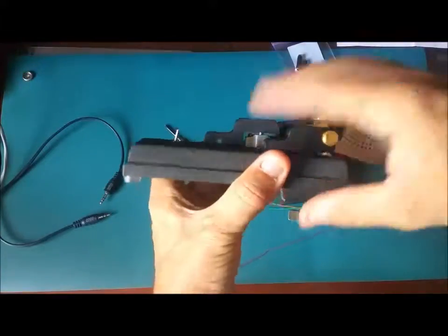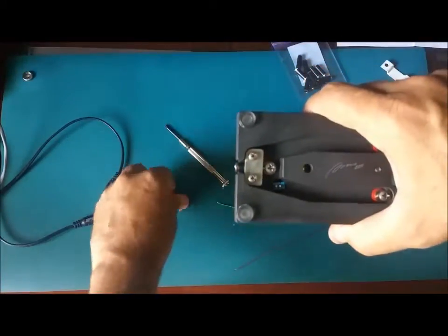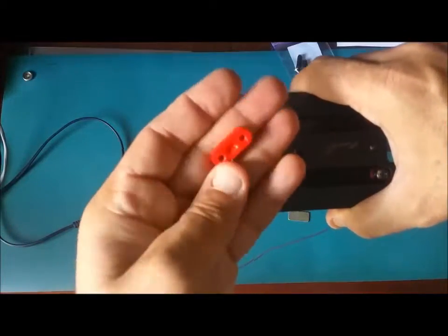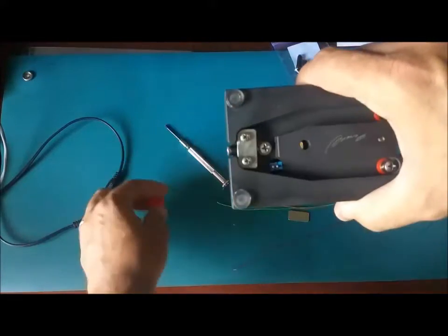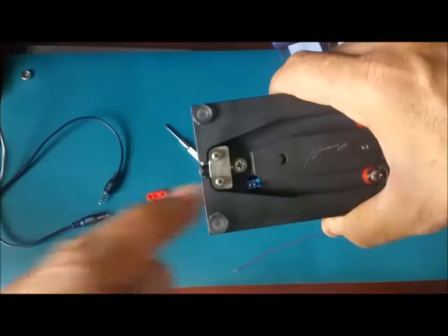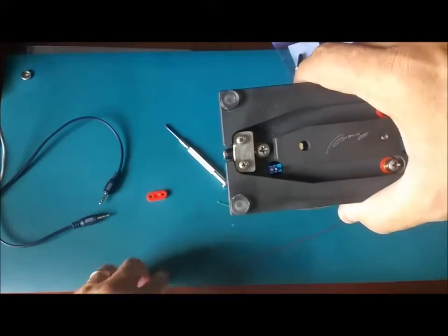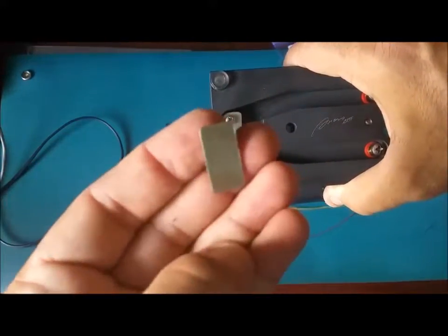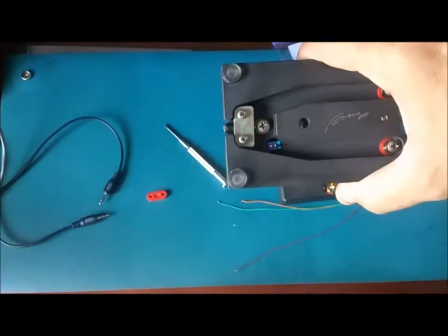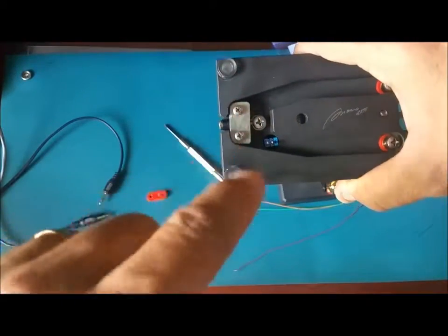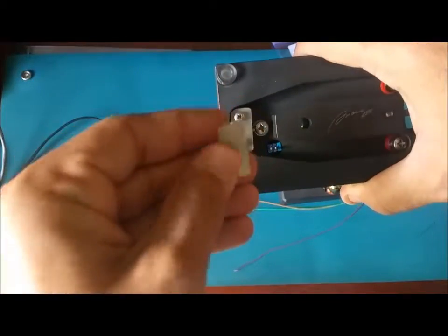So I basically took the red piece that was in there, took that out, and then I started with a piece of metal like this one here. I drilled some holes and then I filed the ends here so it could fit in there.